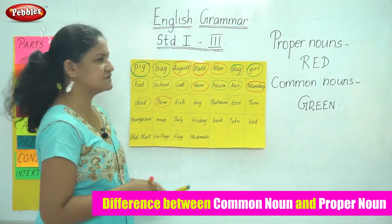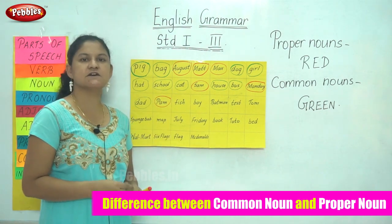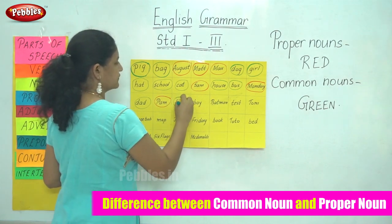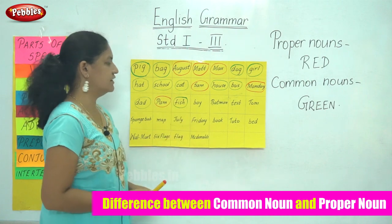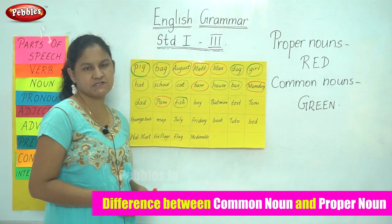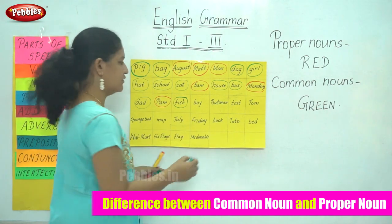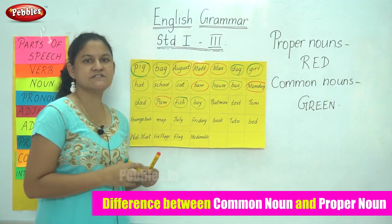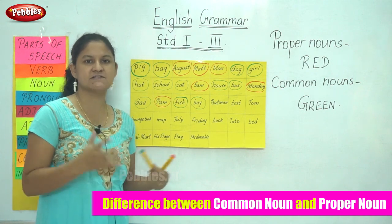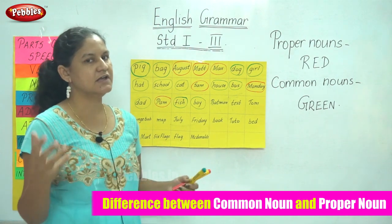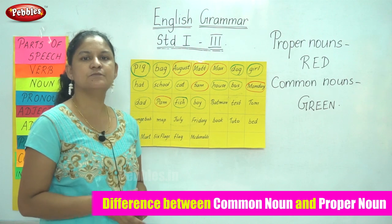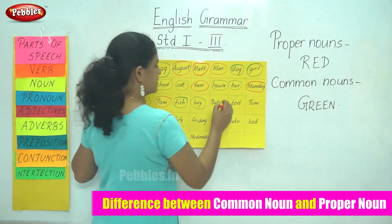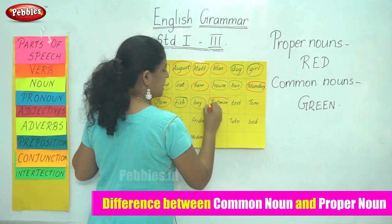The next word is fish. Fish is a common noun, so I circle fish in green. The next word is boy. Boy is the name of a person and is a common noun, so I circle it in green. The next word is Batman. Batman is a particular name of a cartoon character and is a proper noun — it starts with a capital letter. So I use my red to circle the word Batman.